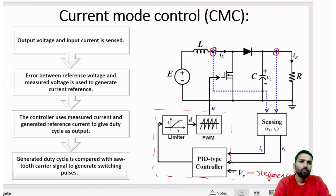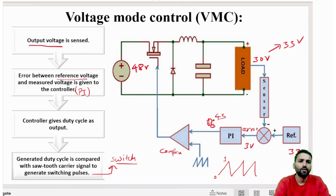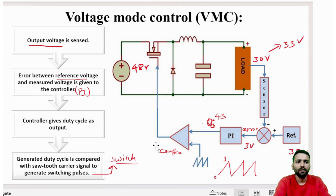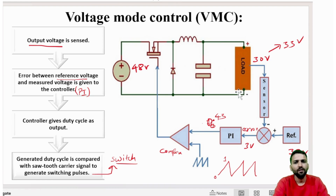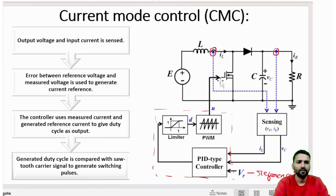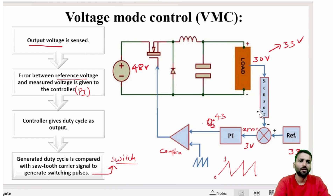In the Simulink model we will be making a buck converter and controlling it using the voltage mode control method. The voltage mode control is a simplified version — it uses only one sensor measuring the output voltage and one PI controller, forming a single control loop.